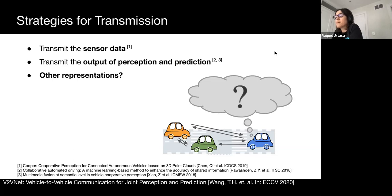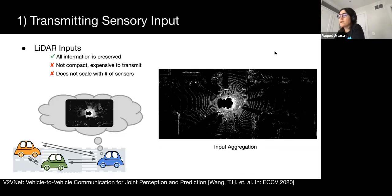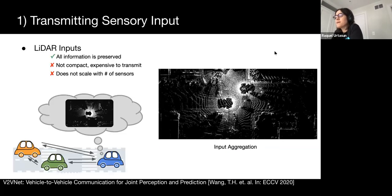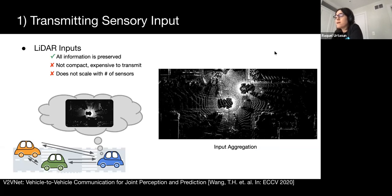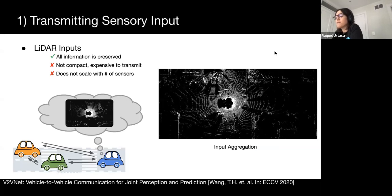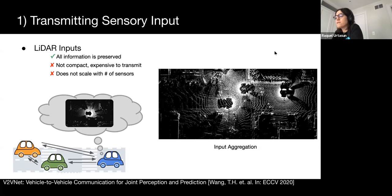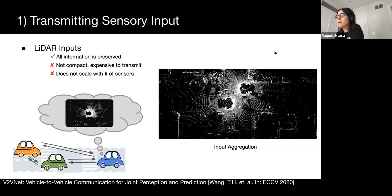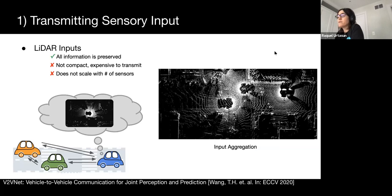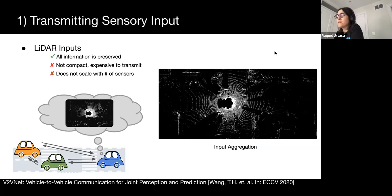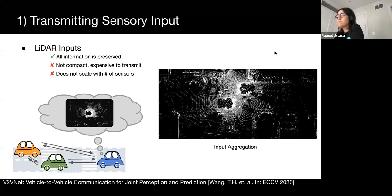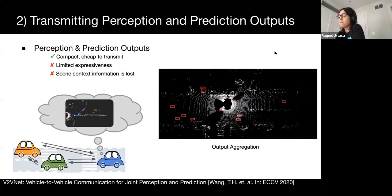Two options immediately come to mind: transmitting input sensor information, or transmitting perception and prediction outputs. When we transmit input sensor data, we gain the benefit of no information loss — each self-driving vehicle has access to the same information seen by the other vehicles. However, sensor data is large in size, and the more sensors there are on the vehicle, the more information there is to send. Furthermore, each vehicle will still need to process all the received sensor data, resulting in significant computation. This makes the approach not scalable. Our second option is to transmit the outputs of perception and prediction, where messages are very compact since describing bounding boxes and trajectories requires few parameters.